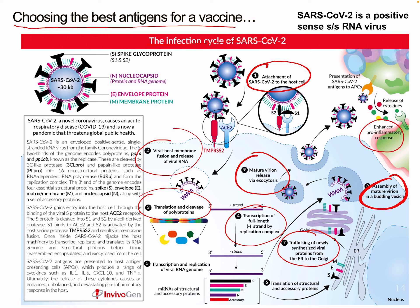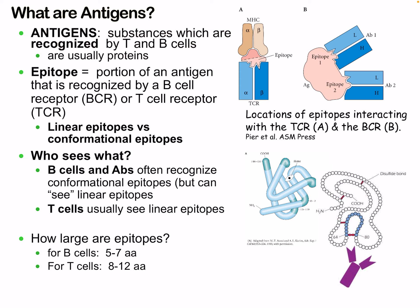This also results in the harmful inflammatory response which tends to cause a lot of problems in COVID. Antigens are substances recognized by T and B cells — usually proteins, but not always. The epitope is the portion of the antigen recognized by the B cell receptor or T cell receptor. We can have linear versus conformational epitopes. B cells and antibodies often recognize conformational epitopes but can also see linear ones, while T cells usually see linear epitopes.